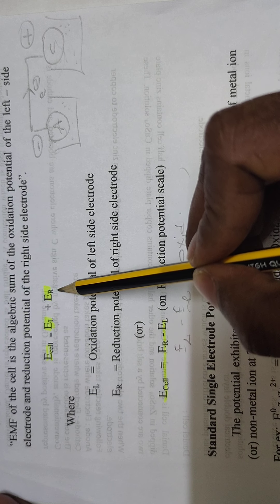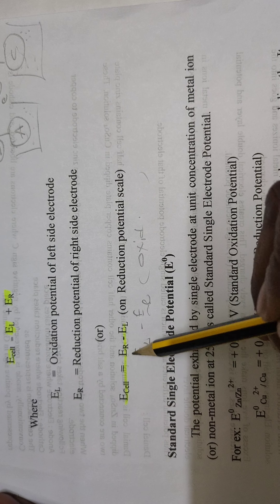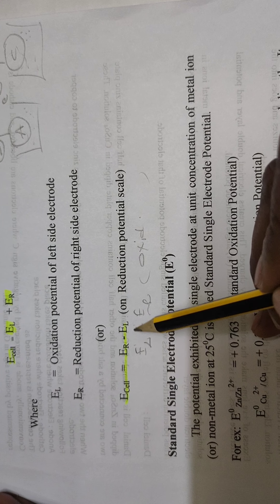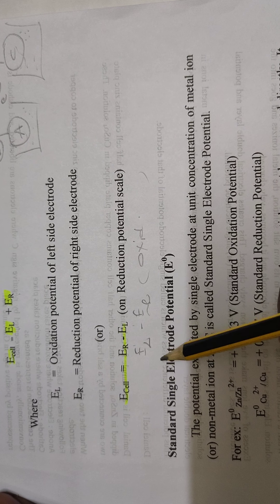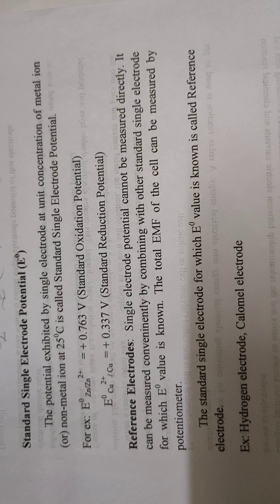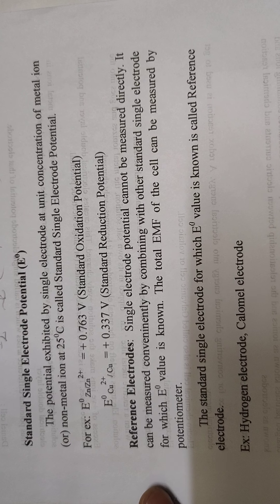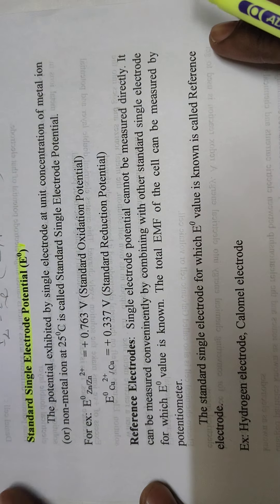Simply, E_cell = E_L + E_R, where E_L equals the oxidation potential of the left-hand side electrode. If you want to express the cell EMF in reduction potential scale, the formula is E_cell = E_R minus E_L.